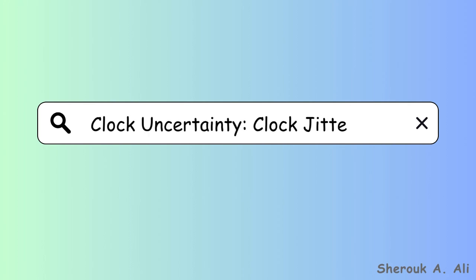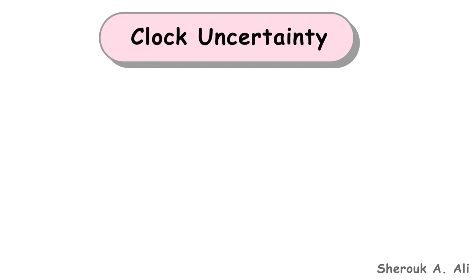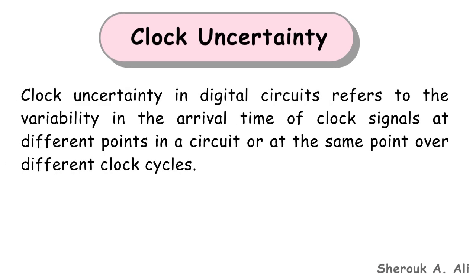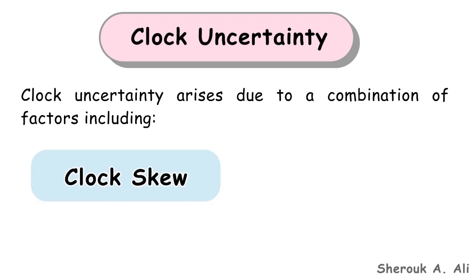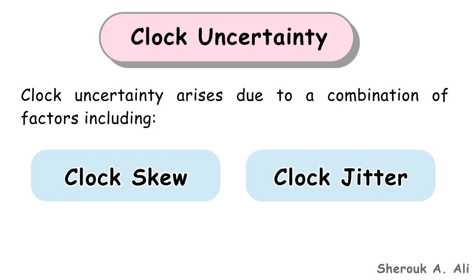Clock Uncertainty and Clock Jitter. As discussed in the previous video, clock uncertainty in digital circuits refers to the variability in the arrival time of clock signals at different points in a circuit or at the same point over different clock cycles. As mentioned previously, clock uncertainty arises due to a combination of factors including clock skew and clock jitter. This video will focus on clock jitter.